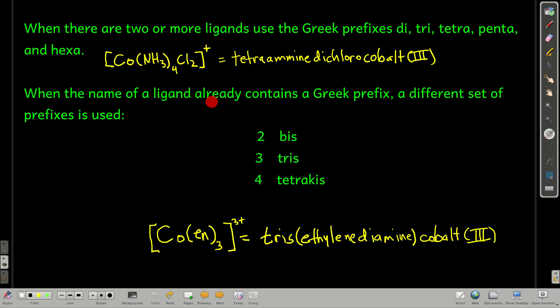If the ligand already has a Greek prefix in it, like ethylenediamine does, then we use a different set of prefixes: bis for two, tris for three, and tetrakis for four. So here, we have three ethylenediamines, we would call this complex ion tris ethylenediamine cobalt(III).